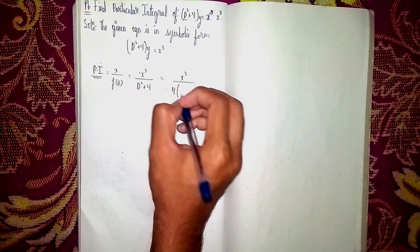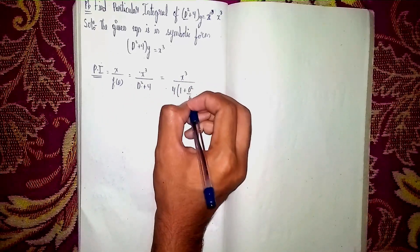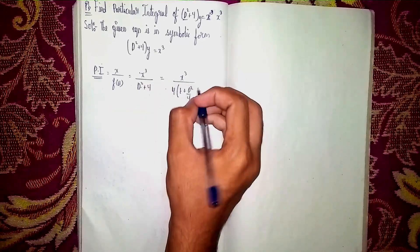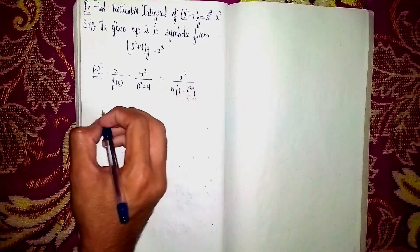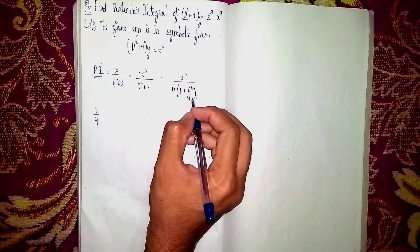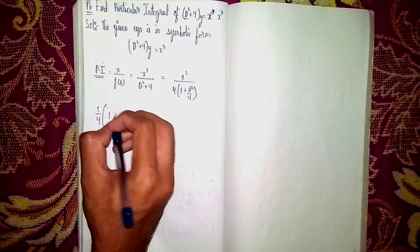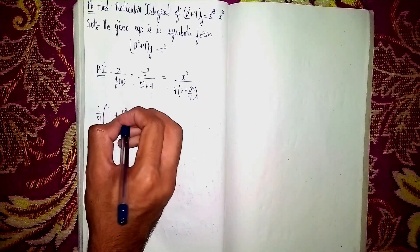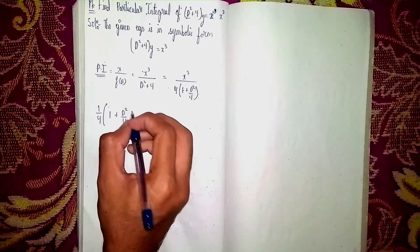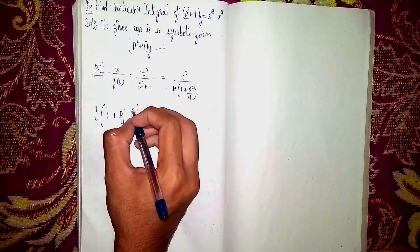So we get 4 under bracket (1 + D²/4). If you multiply by 4 we get the same result. Take 4 outside: (1/4) × (1 + D²/4)⁻¹ × x³. Nothing else will change — only the inverse comes here.